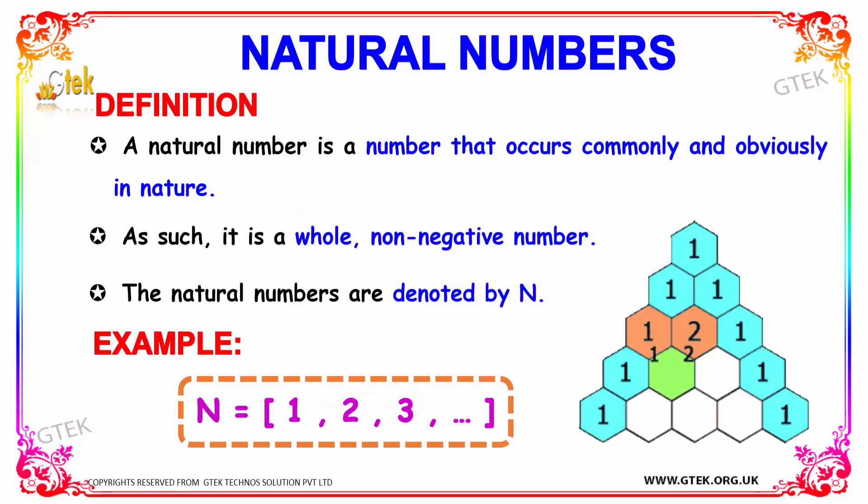So let's begin with natural numbers. The foremost definition of a natural number is that a natural number is considered as a number that occurs commonly and obviously in nature. As such, it is a whole, non-negative number.